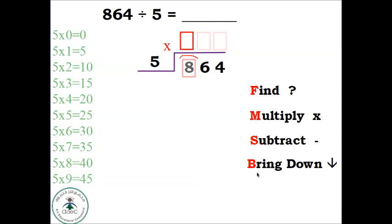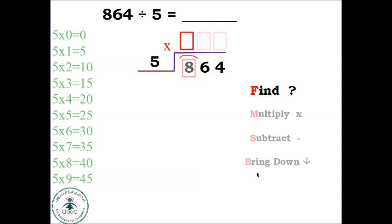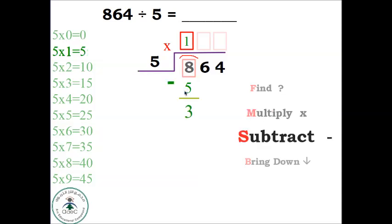Find: Find 8 in the table of 5. We ask, 5 times what is 8 or less? We don't have 8, but it's between 5 and 10, so we take the smaller number. 5 times 1 is 5. Multiply: Write 1 in the quotient. 1 goes up, 5 goes down. Subtract: Big minus small, 8 minus 5 equals 3. Bring Down: We bring down the 6 and get 36.